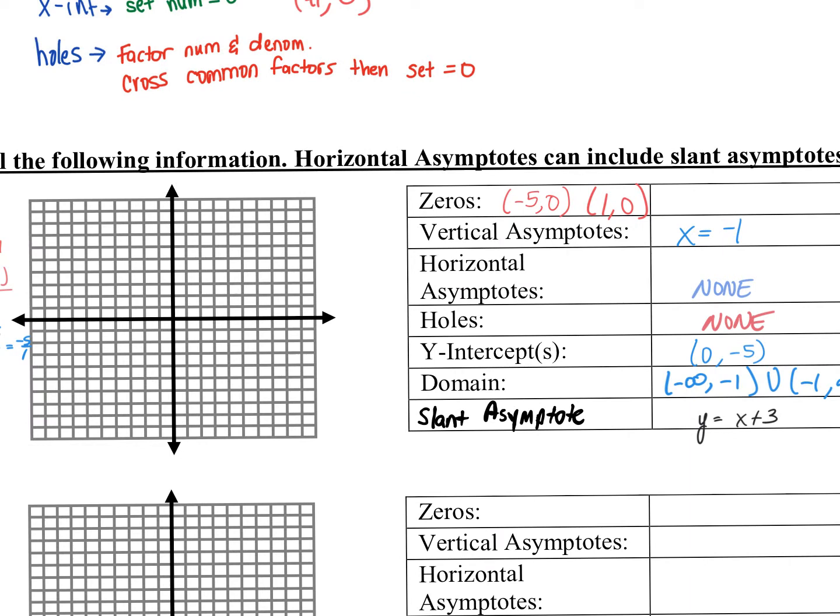On the quiz tomorrow, the first six questions are all going to be separate — find this, find that. Then the last question on everybody's quiz is going to be just like this, where it says find everything, and I'll give you a list of everything to find.